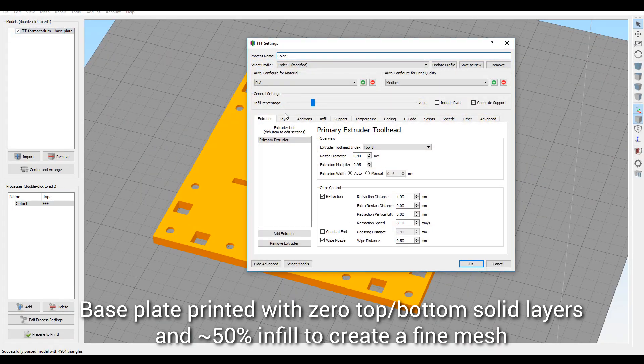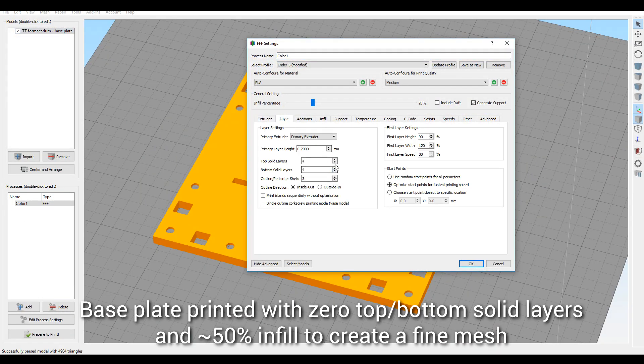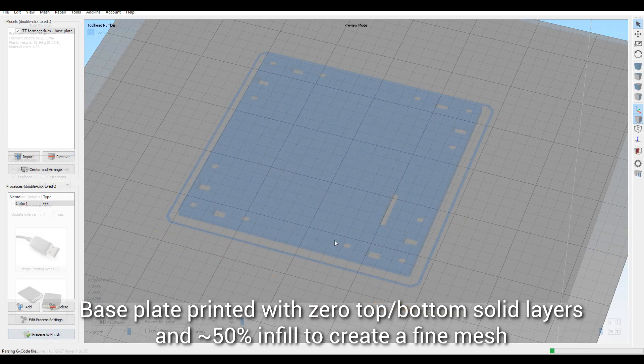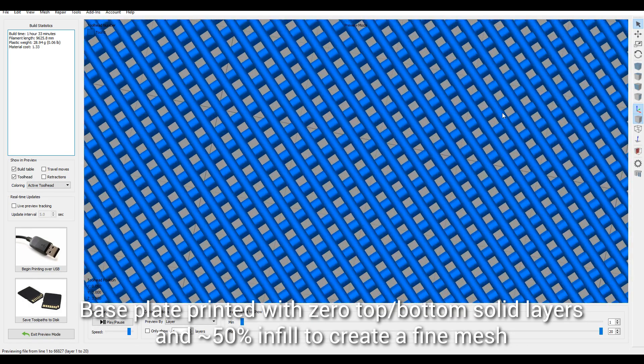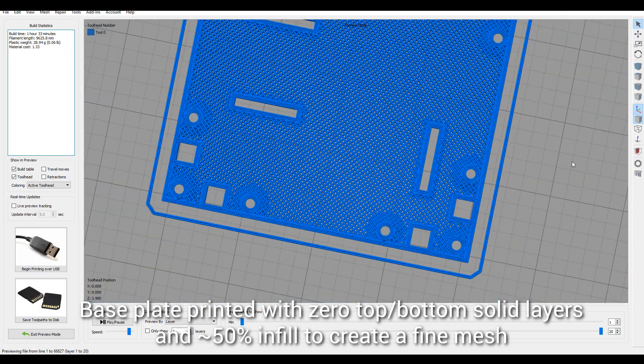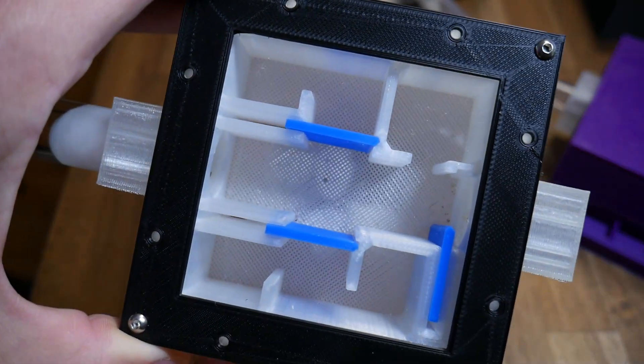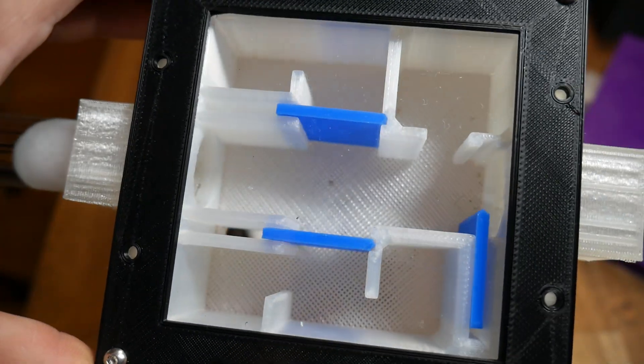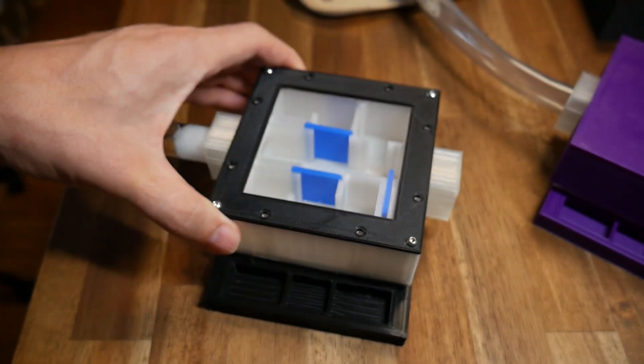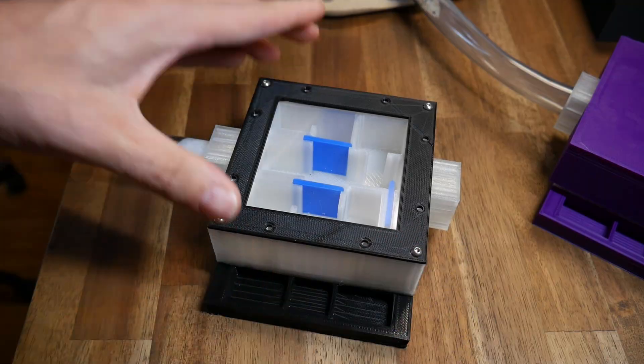Now the base plate sits just above this and it needs to be printed in a special way. Both the top and bottom solid layers need to be set to zero and the infill set to around 50%. When we preview the g-code we can see that this has the effect of making a fine mesh that the ants can't slip through but allows airflow and moisture to come up to help with humidity. You can see the final effect it is actually like a mesh and I recommend printing this one in white so when it's installed there's enough contrast to see the ants clearly.